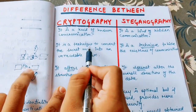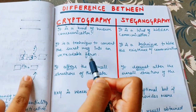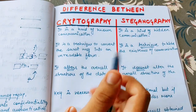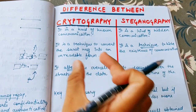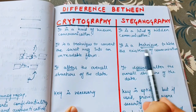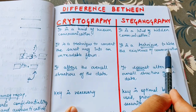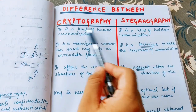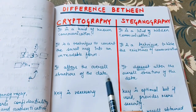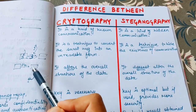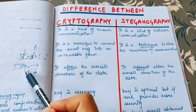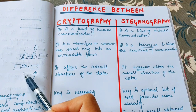In cryptography, it is a technique to convert the secret message into an unreadable form — that is what we call ciphertext. We call that process encryption, and the output in unreadable format is the ciphertext. In steganography, it is a technique to hide the existence of the communication. In cryptography, it alters the overall structure of the data — we take a message and convert it into an unreadable format called ciphertext using encryption algorithms.